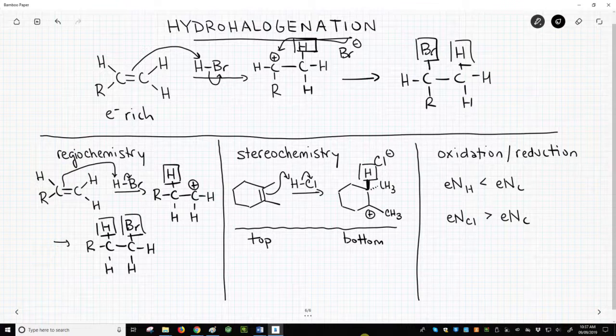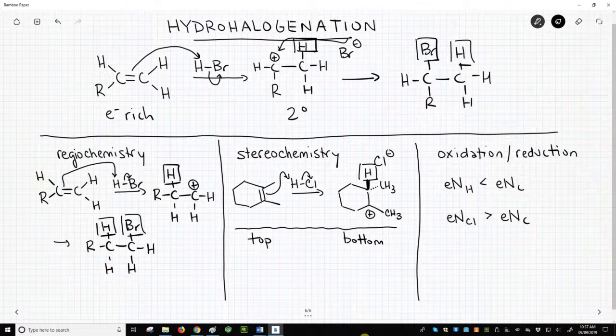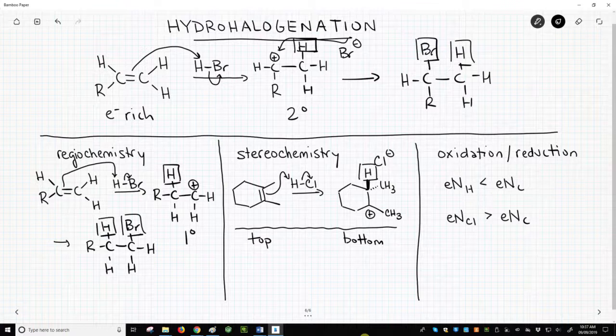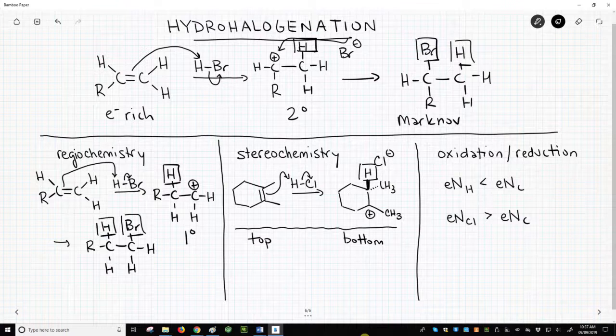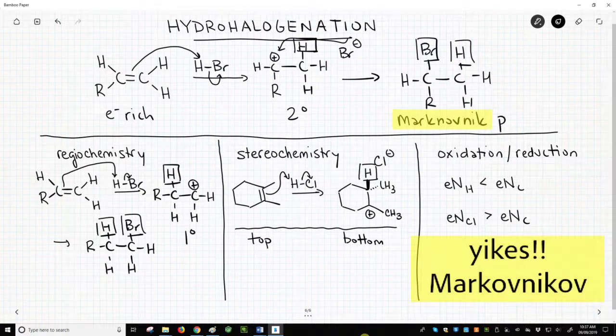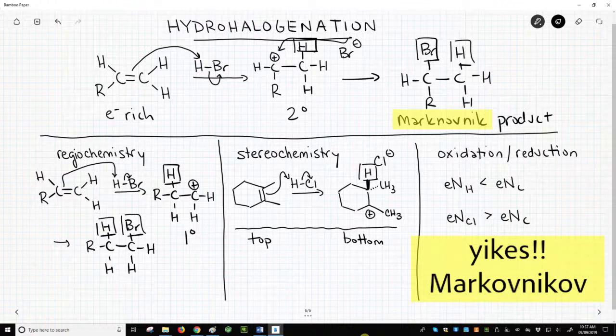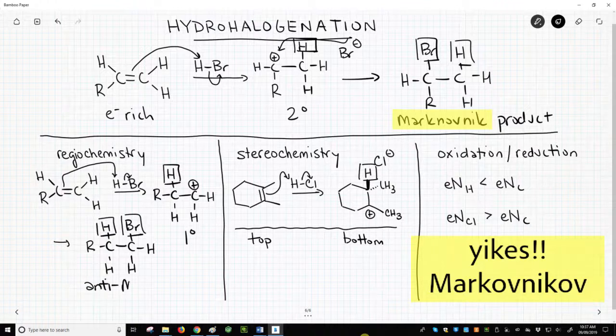Why is it different? Well, as it turns out, it has to do with carbocation stability. The top reaction forms a secondary carbocation while the bottom makes a primary. Secondary is more stable. So when doing a hydrohalogenation, protonate the alkene so that the reaction goes through the more stable carbocation. The product that forms from the more stable carbocation is called the Markovnikov product. The unobserved regioisomer is called the anti-Markovnikov product.